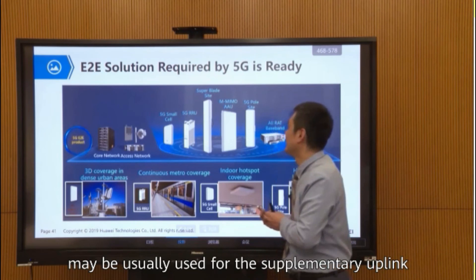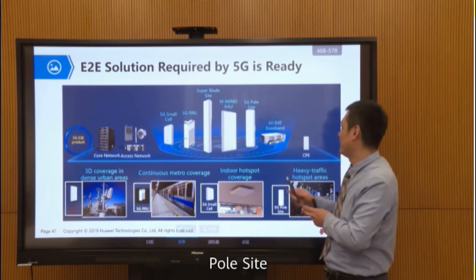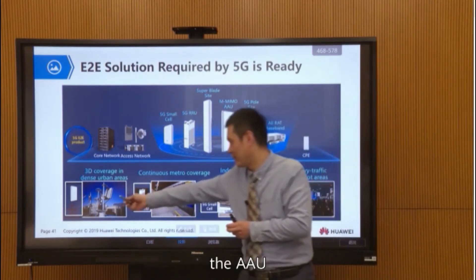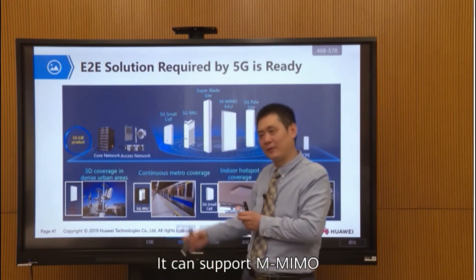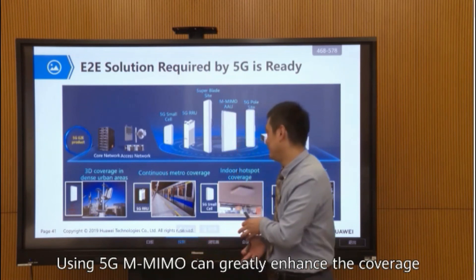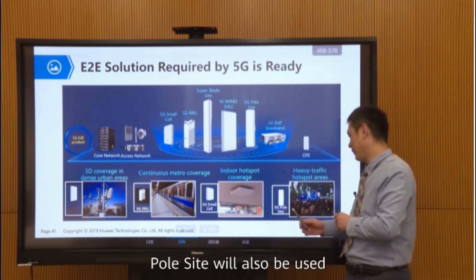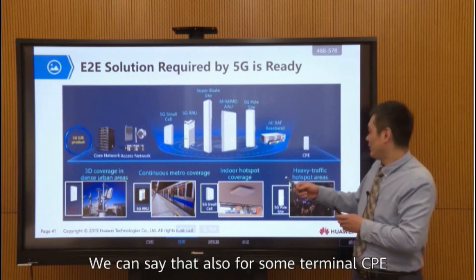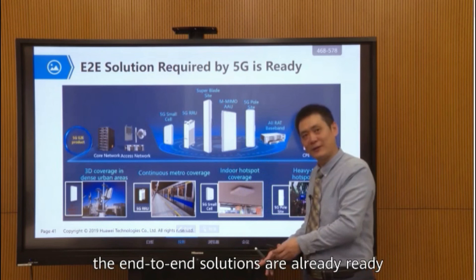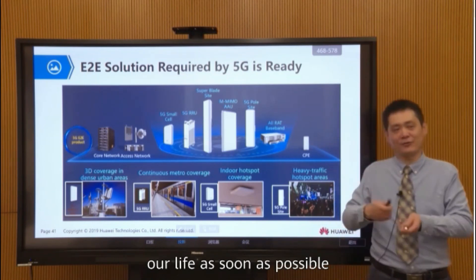There is also the super blade and massive MIMO AAU. In most cases we will use the AAU, which supports massive MIMO. Because 5G frequencies are high, using massive MIMO can greatly enhance coverage. In other scenarios, 5G RRU and small cells will also be used. For terminals, CPEs and other terminals are already available. So the end-to-end solution is now ready, and we hope that 5G can come into our lives as soon as possible.